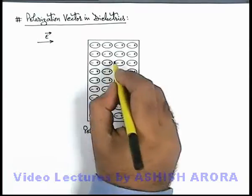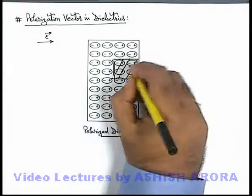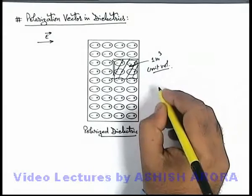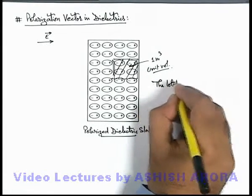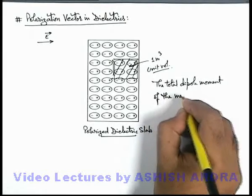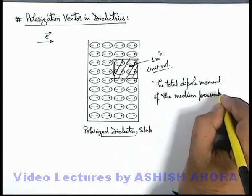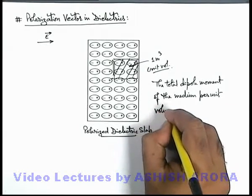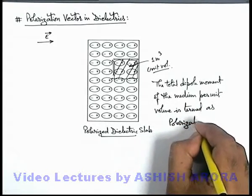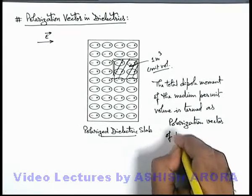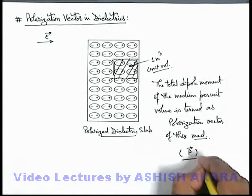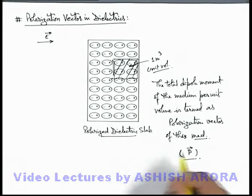Now in this situation, for a given unit volume — say if we consider a unit volume cube, a 1 meter cube — we can simply define the total dipole moment of the medium per unit volume. This is termed as the polarization vector of this medium, and is denoted by P-vector. So we can directly state it is dipole moment per unit volume.